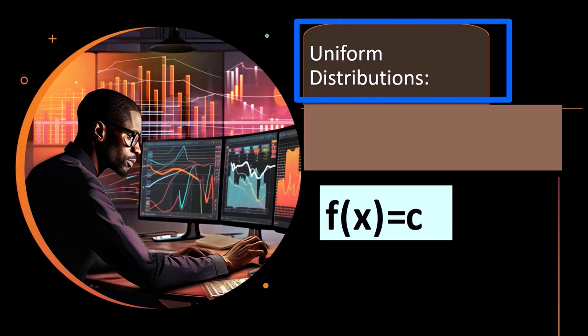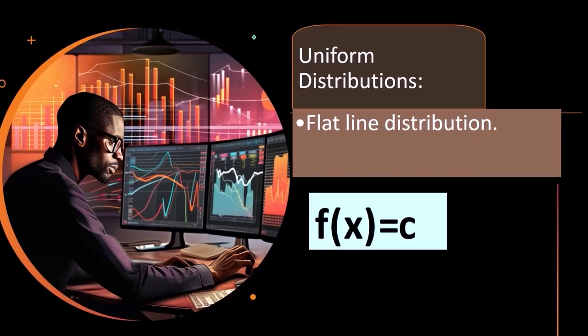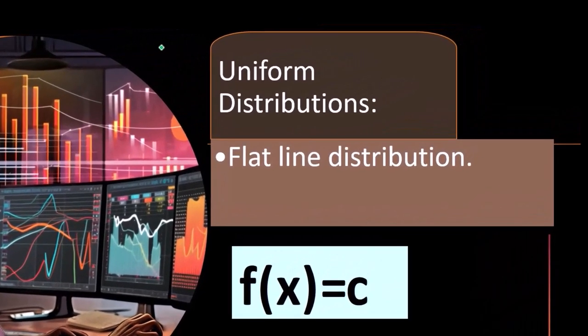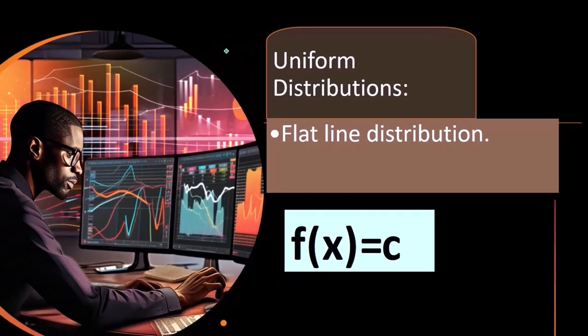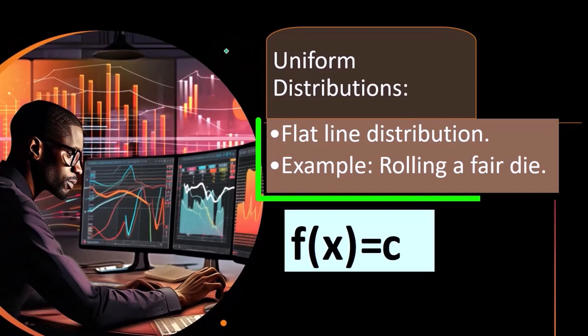So we've got the uniform distribution. This is the easiest one to start thinking about. If you're thinking about a set of data, we're trying to say: is this set of data, the histogram that's coming from it, something that I can represent with one of these mathematical formulas? And the first one is a straight line. So that would be a flat line distribution. An example would be rolling a fair die.